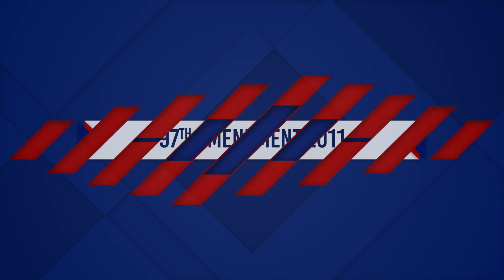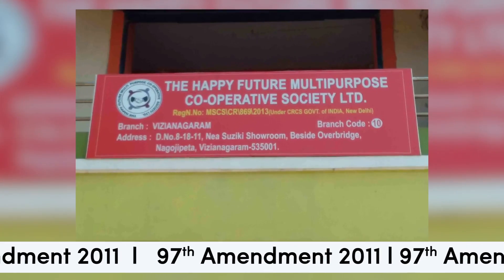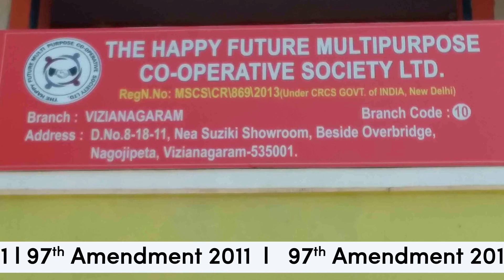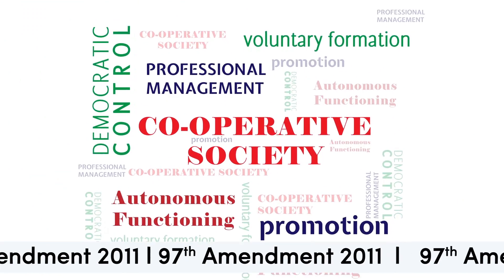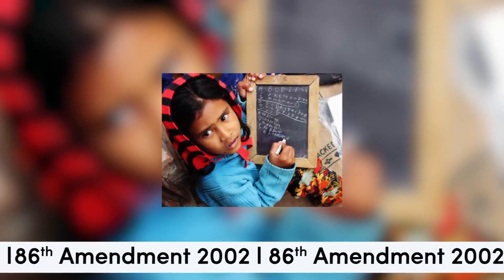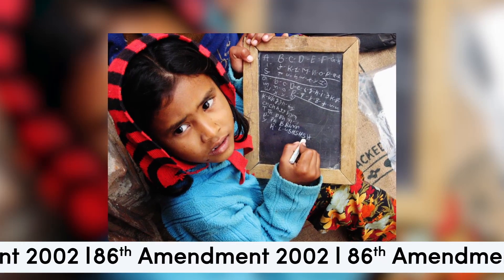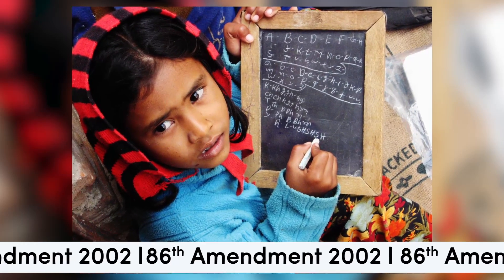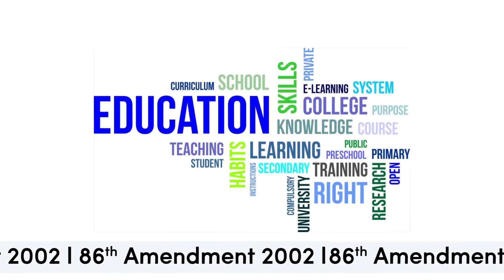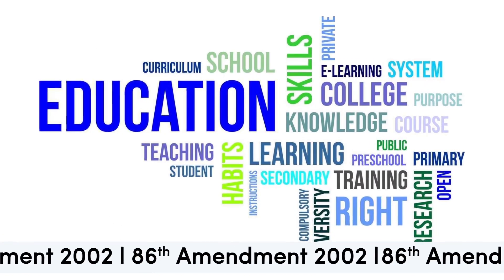The 97th Amendment in 2011 inserted Article 43B, which says that the states shall endeavor to promote the voluntary formation, autonomous functioning, democratic control, and professional management of the co-operative societies. Further, the 86th Amendment changed the subject of Article 45 and brought it along with the fundamental rights as Article 21A for children of 6 to 14 years of age. The same article was now a directive principle directing the state to take care of children below 6 years.